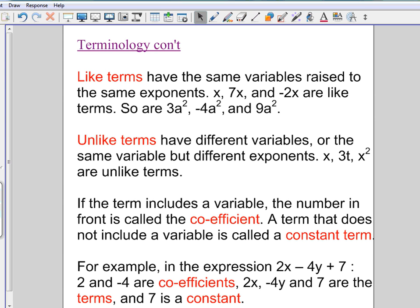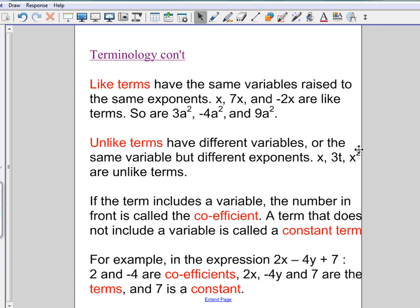If the variables are different, or the variables might be the same, but the exponents are different, then they're called unlike terms. So down here, x and x squared, although they have the same variable, they're not to the same exponent, so they're not like terms.